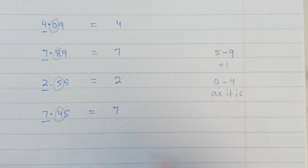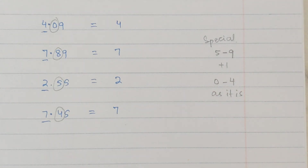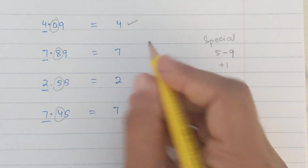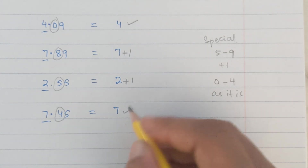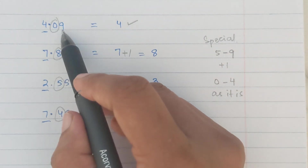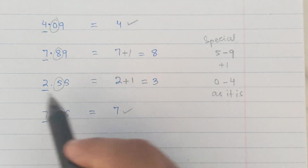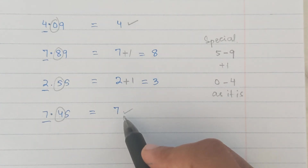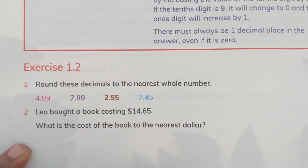Let's see where we have special digits. 0 — no, so it stays 4. 8 — yes, so we add 1, giving us 8. 5 — yes, so we add 1, giving us 3. 4 — not a special digit, so it remains 7. So: 4.09 rounded to the nearest whole number is 4; 7.89 rounds to 8; 2.55 rounds to 3; and 7.45 rounds to 7.